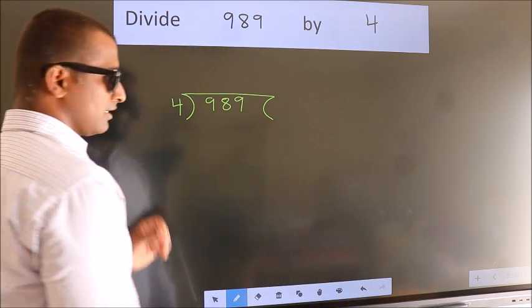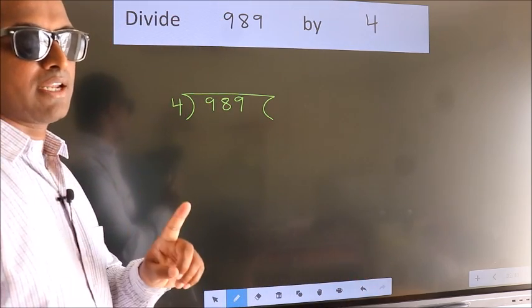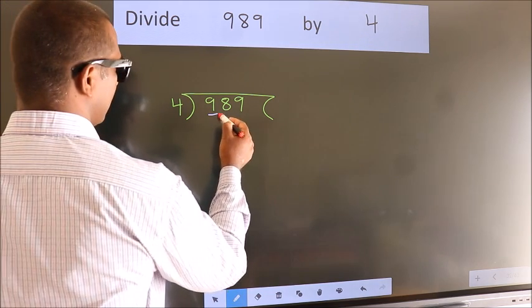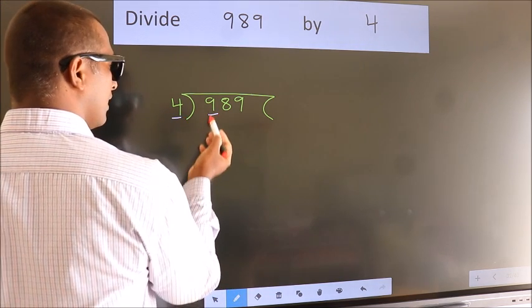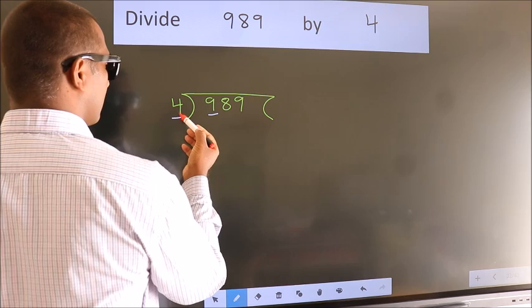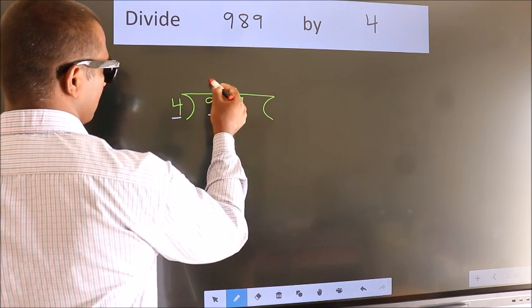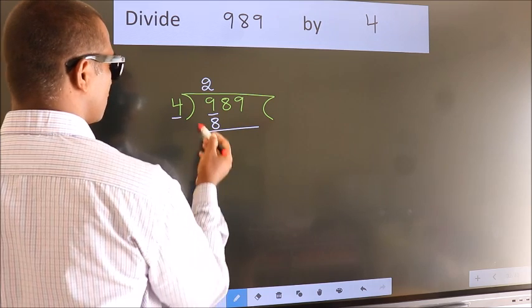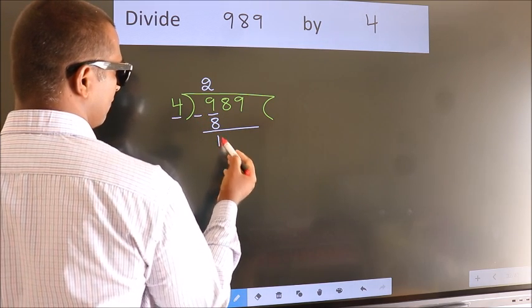This is your step 1. Next, here we have 9, here 4. A number close to 9 in 4 table is 4 twos, 8. Now we should subtract. We get 1.